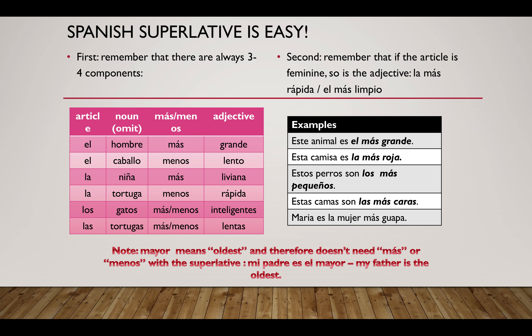Remember: if the article is feminine, the adjective must agree — la más rápida, el más limpio. Some examples: este animal es el más grande; esta camisa es la más roja; estos perros son los más pequeños; estas camas son las más caras; María es la mujer más guapa; Juan es el hombre más guapo.